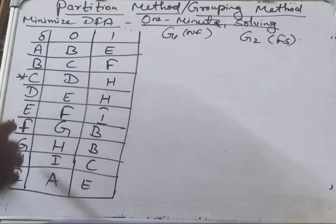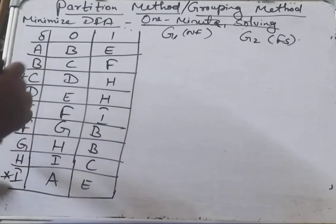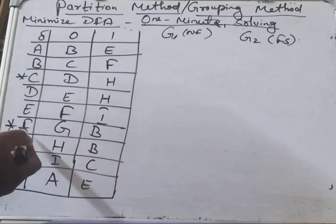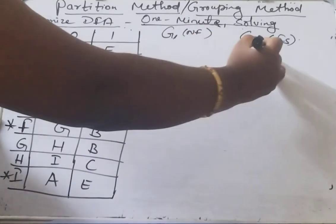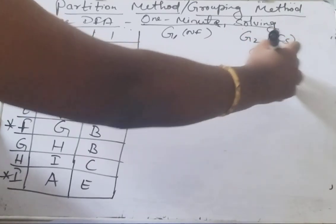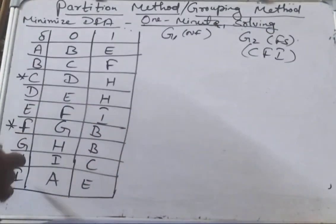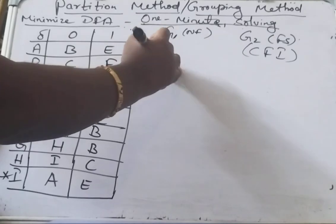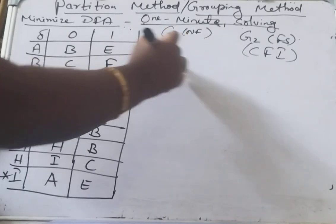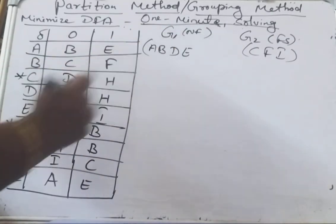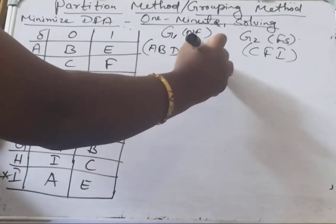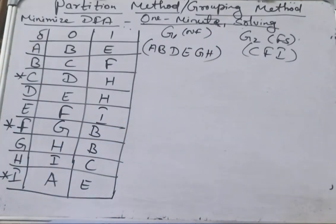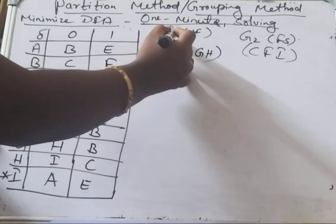In this DFA we have totally 9 states from A to I, and we have 3 final states: C, F, and I. The rest are all non-final states. Put C, F, I into group G2, and partition the others — A, B, D, E, G, H — as non-final states into G1.